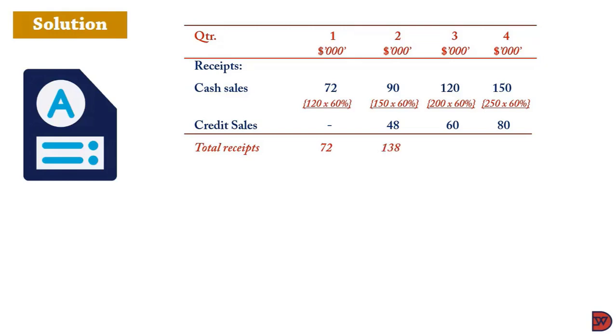Total receipts are: 72,000 for Q1, 138,000 for Q2, 180,000 for Q3, and 230,000 for Q4. We now move to purchases.